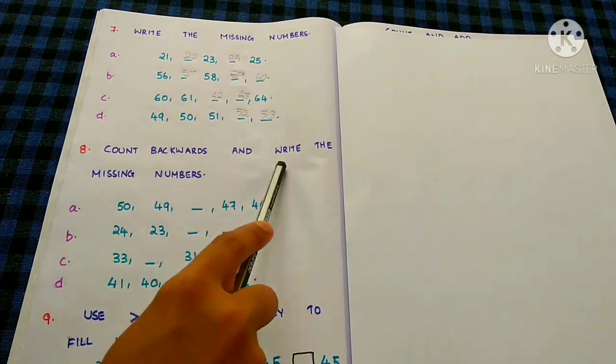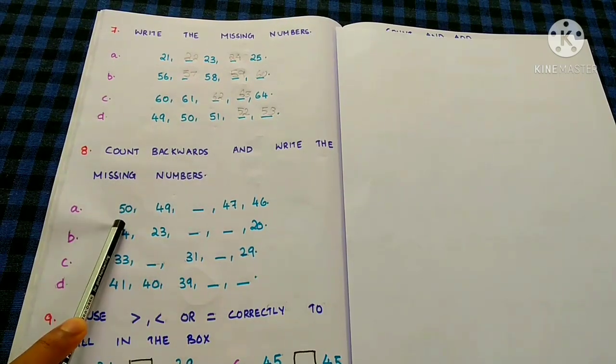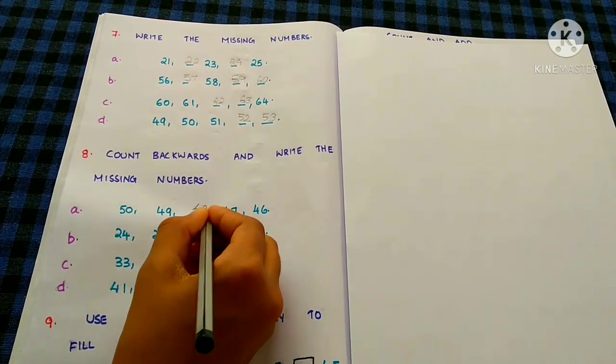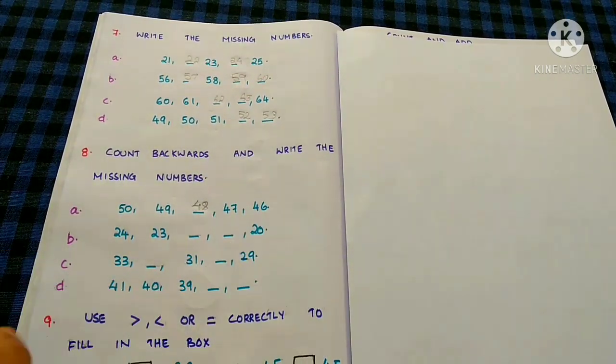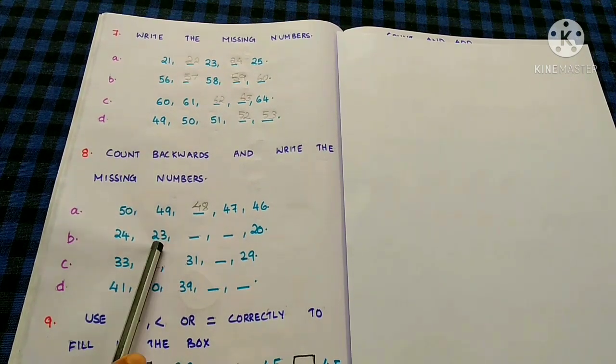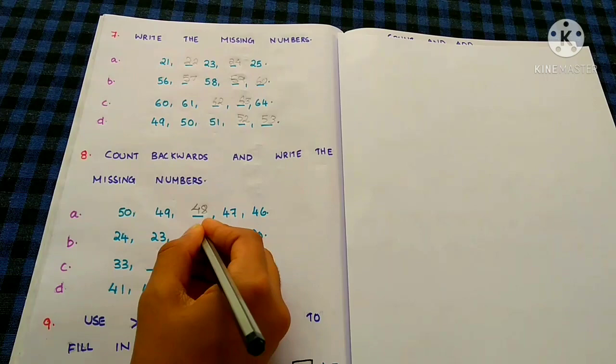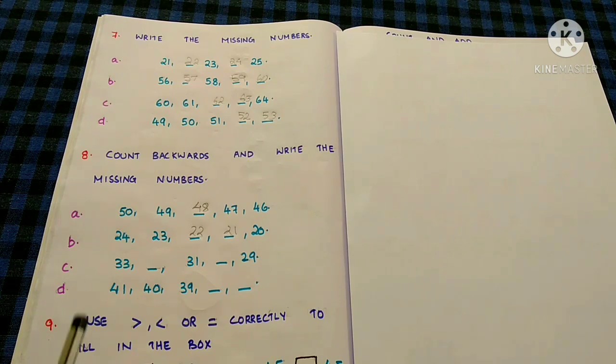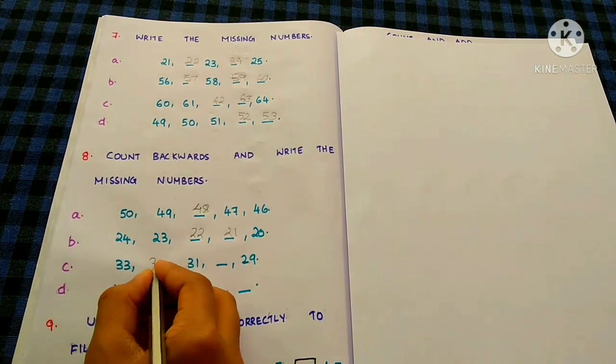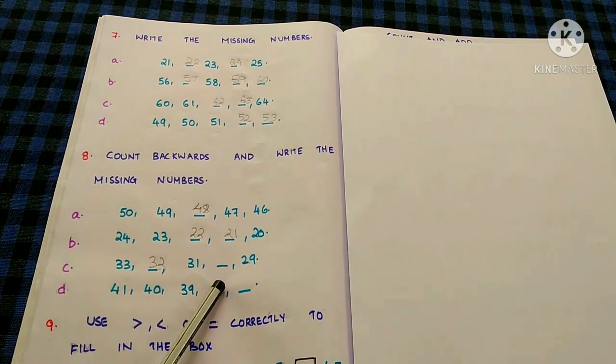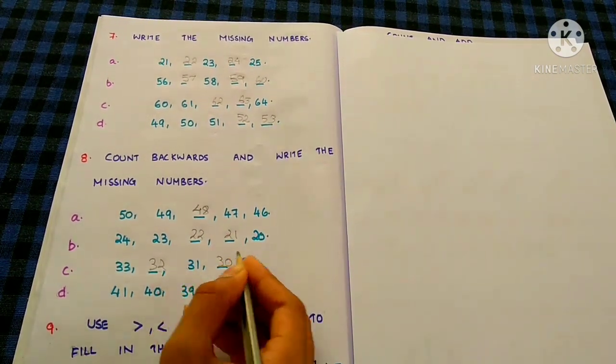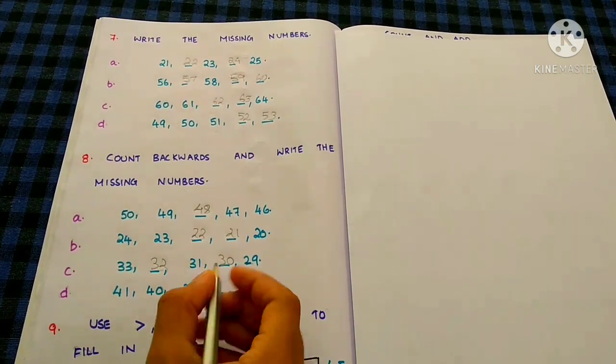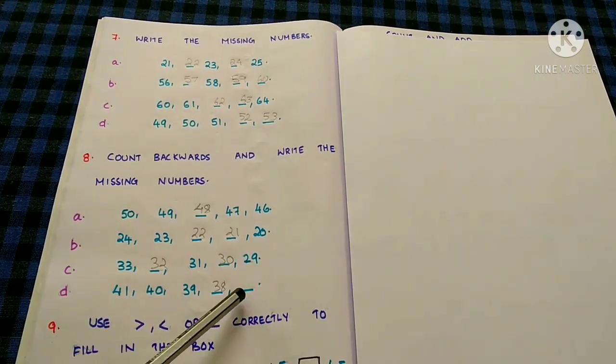Count backwards and write the missing numbers. 50, 49, 48, 47, 46. 24, 23, 22, 21, 20. 33, 32, 31, 30, 29. 41, 40, 39, 38, 37.